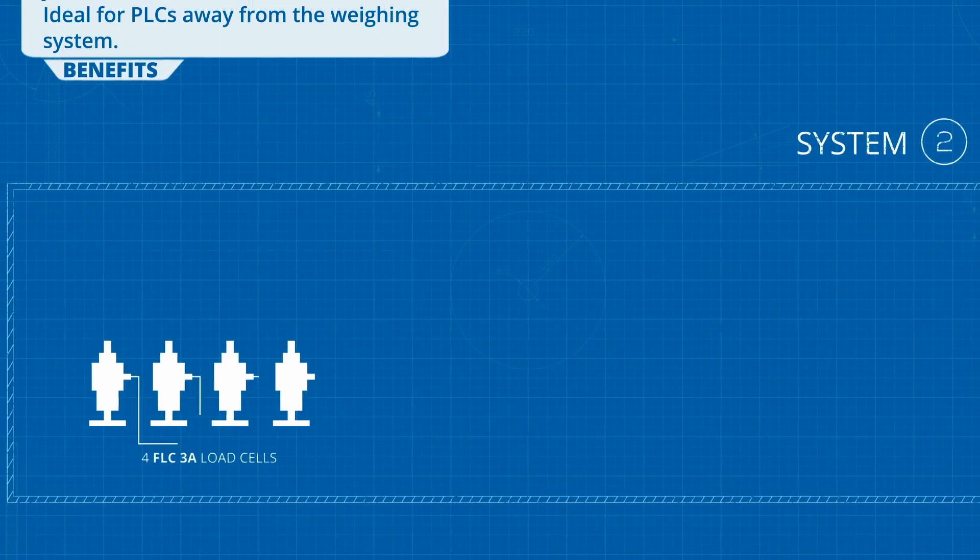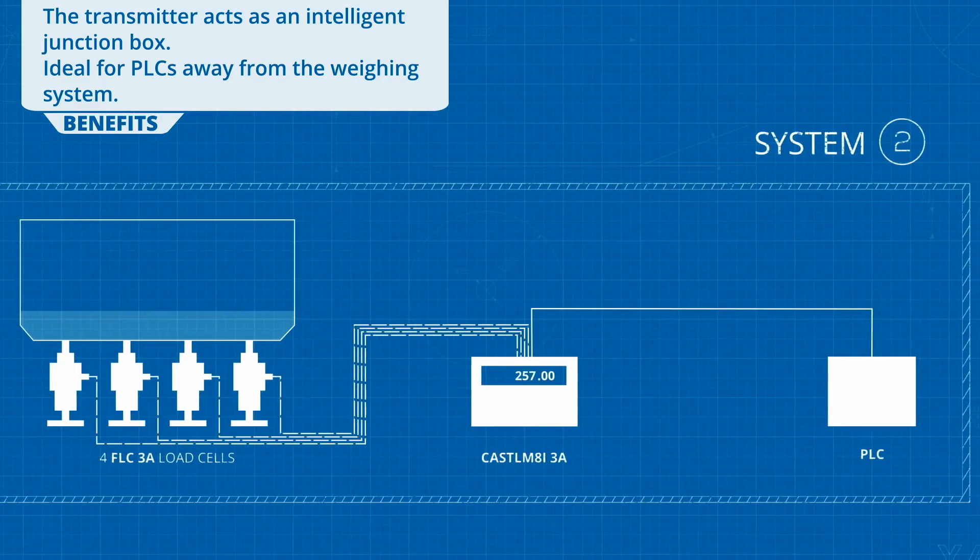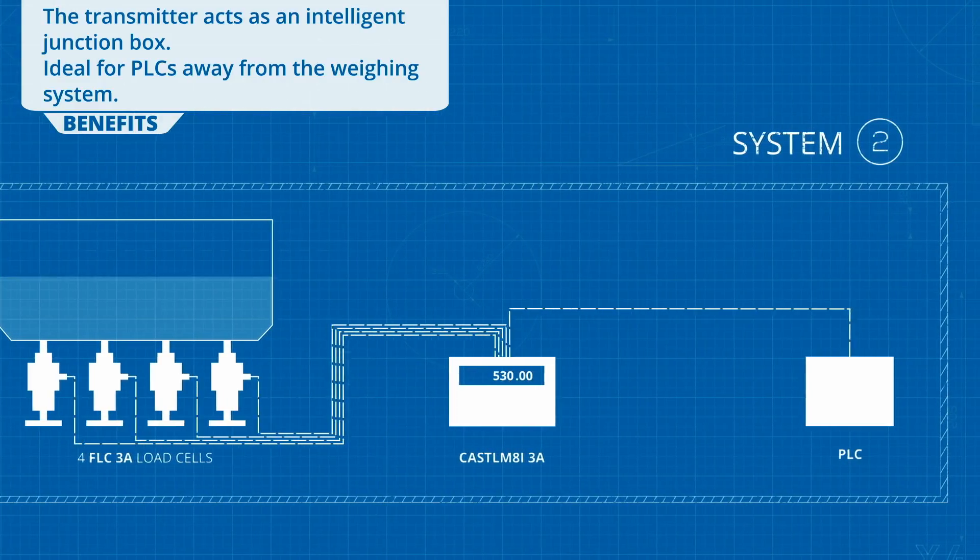Four FLC load cells connected to the CAS TL-M8 Inox multi-channel transmitter located in the field next to the weigh tank.